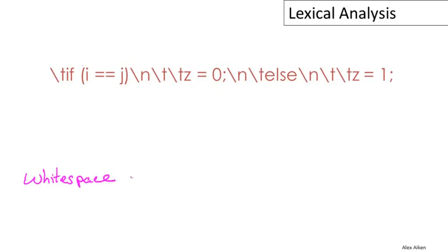We'll need white space—sequences of blanks, new lines, tabs, things like that. We'll need keywords. We'll need variables, which we'll call identifiers, and we'll need integers, which I'll call numbers here.